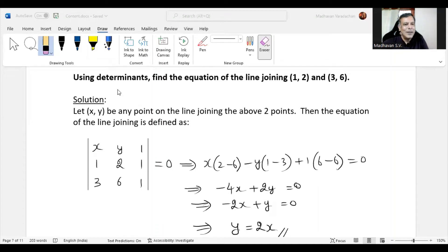Hello everyone. This question says using determinants find the equation of the line joining (1,2) and (3,6).